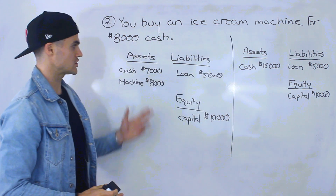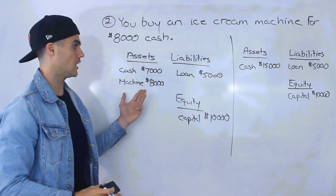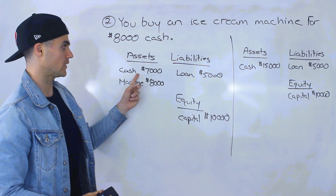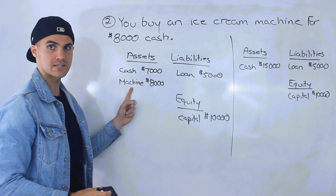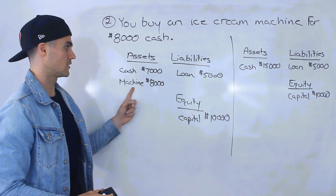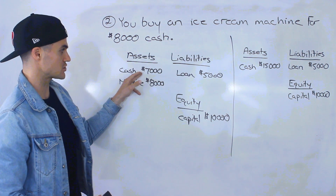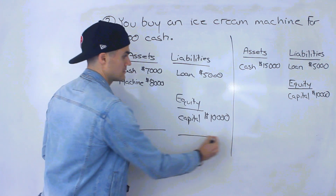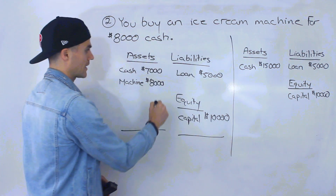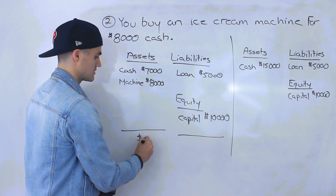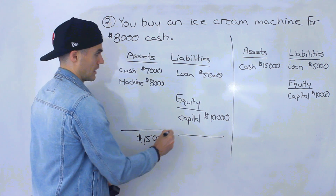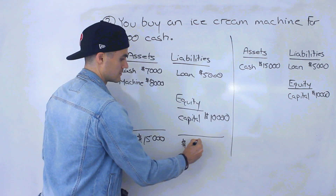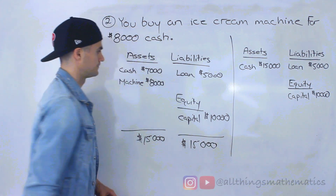Notice that from this transaction, the only thing that changed was the left side of the balance sheet. One asset went down and we have a new asset — the machine. Cash is seven thousand, machine is eight thousand — both sides are still balancing. If we add up all the numbers on the left we get fifteen thousand, and if we add up all the numbers on the right we also have fifteen thousand.